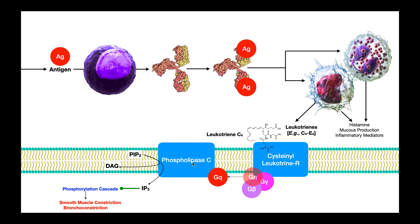That enzyme is called phospholipase C. There's a phospholipid here, PIP2 — phosphatidylinositol bisphosphate — normally situated in the plasma membrane. Phospholipase C, when activated, breaks this phospholipid apart into two components: DAG or diacylglycerol, which is hydrophobic and remains in the membrane where it can recruit other proteins, and the other product — soluble in the cytoplasm — is inositol trisphosphate, or IP3. IP3 triggers a phosphorylation cascade that leads to smooth muscle contraction and ultimately bronchoconstriction.